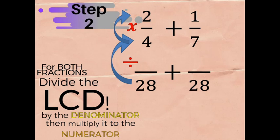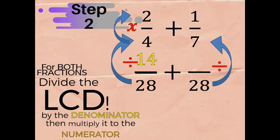So: 28 divided by 4 is 7, times 2 equals 14. Now let's do the left wing: 28 divided by 7, times 1, is equal to 4. As you can see, we arrive with 14 over 28 and 4 over 28, which are now considered similar fractions.